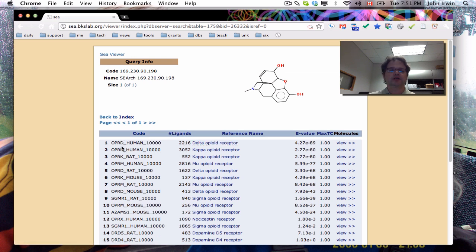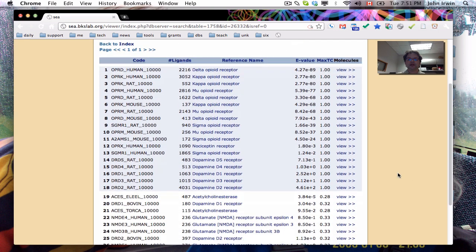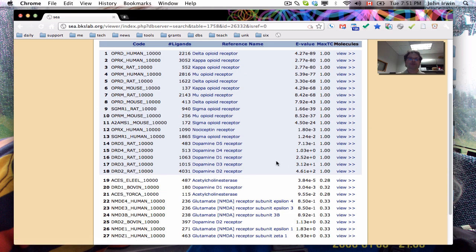Well, there's the human annotation for delta and kappa. Then there's rat and mouse and so on. And so all these predictions are known. So morphine is an opioid receptor, again, okay? And it's also known to hit dopamine. But we also have a prediction here.